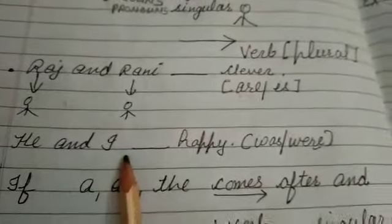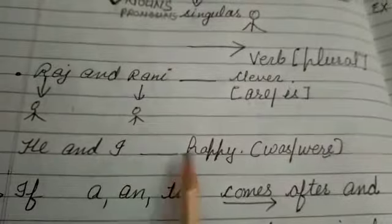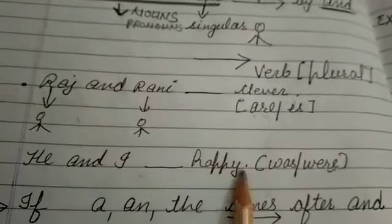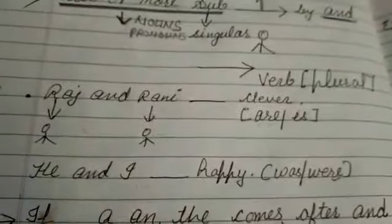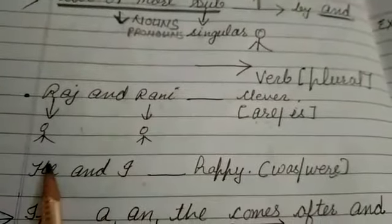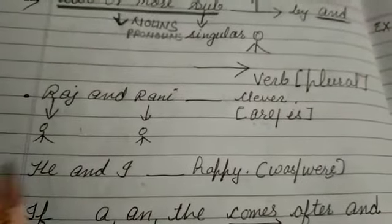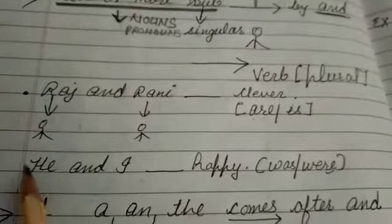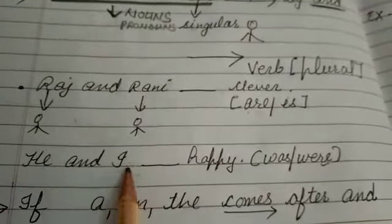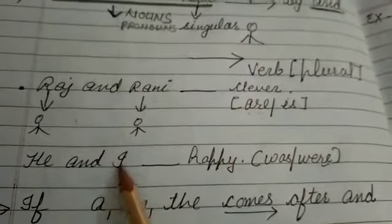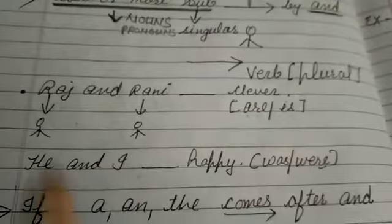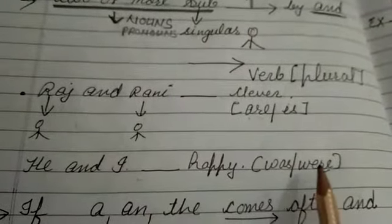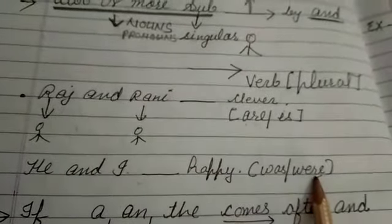Next example: 'He and I __ happy.' Here 'he' refers to a third person and 'I' is the speaker — two different persons are being referred to. So the subject is plural, and we have to apply the plural verb. That is 'are.' He and I are happy.